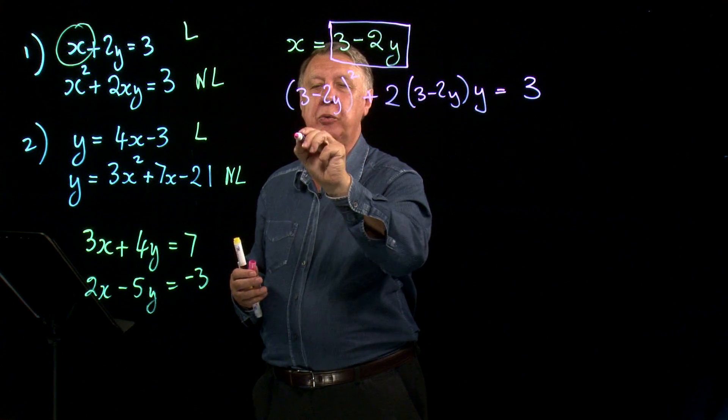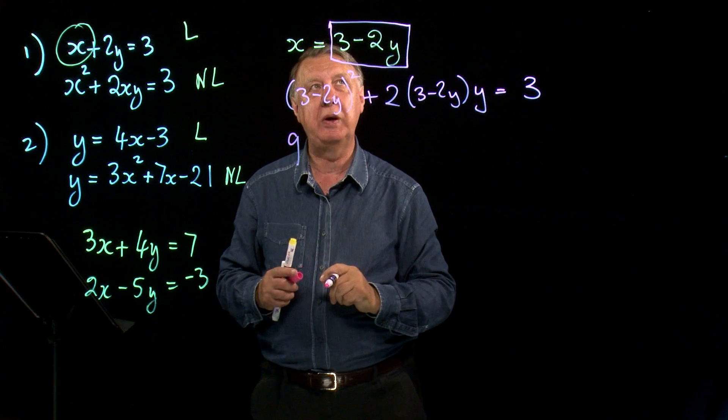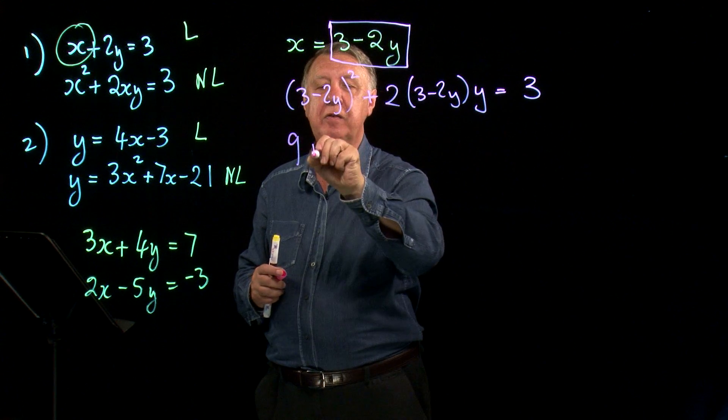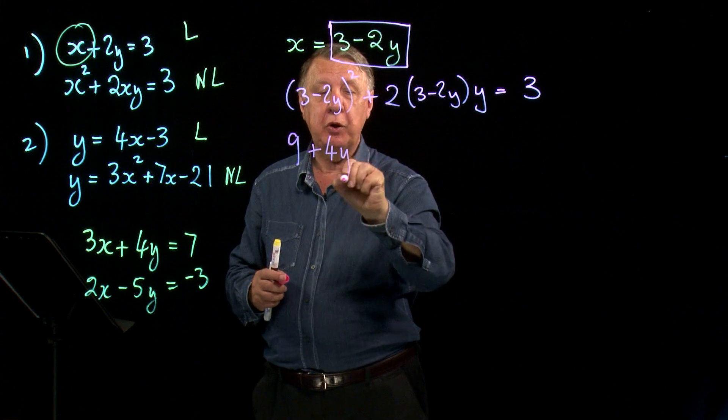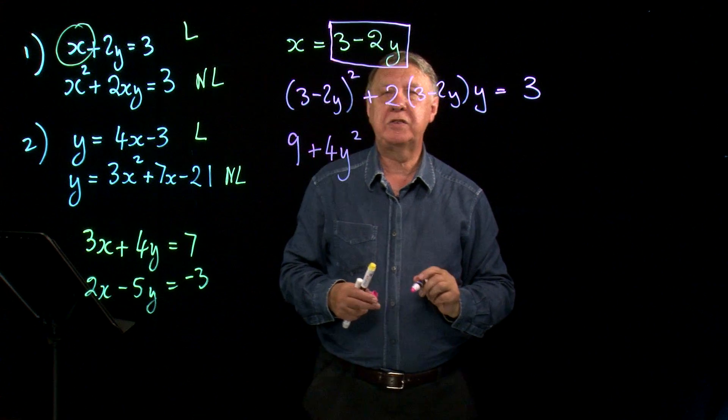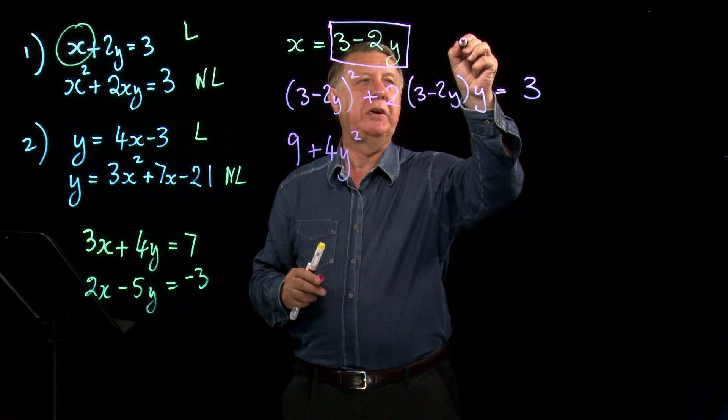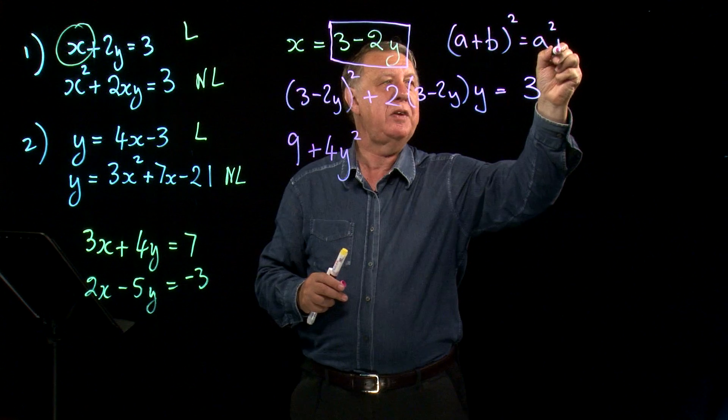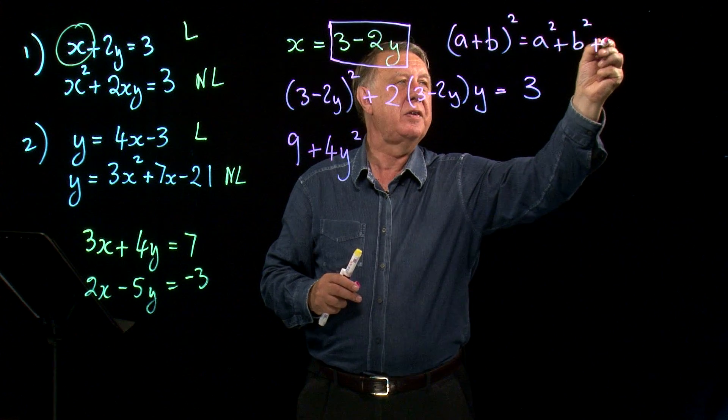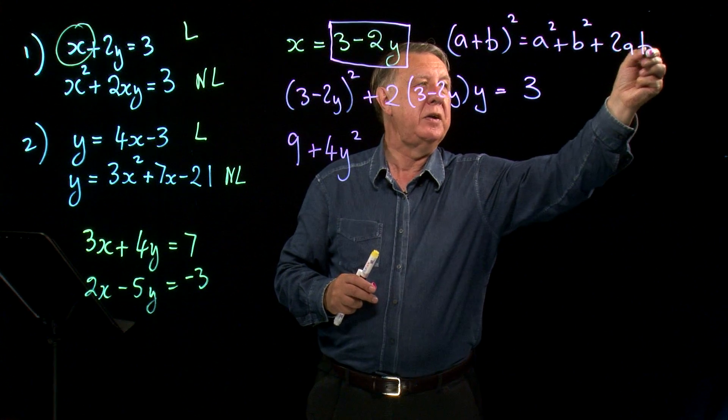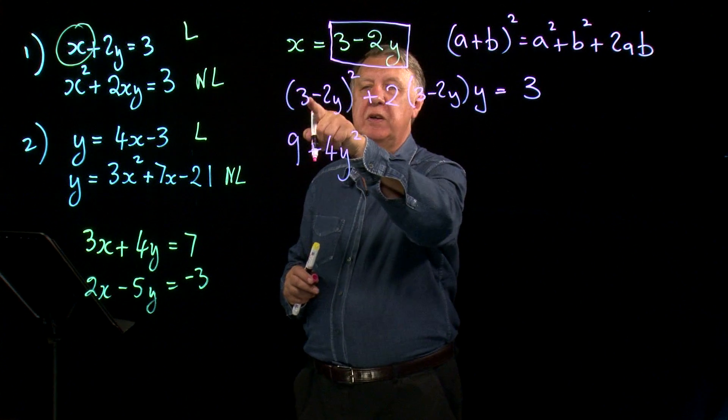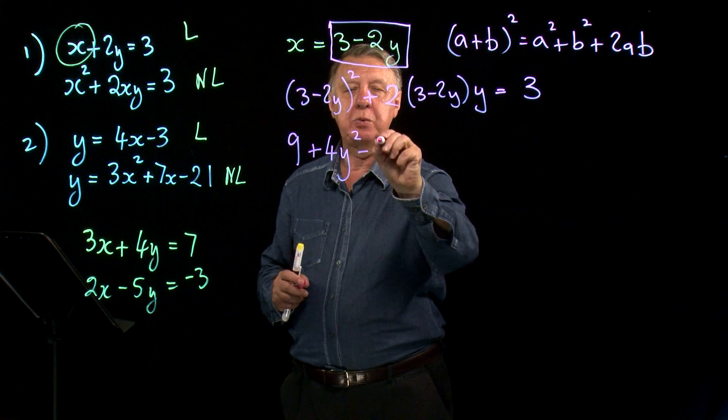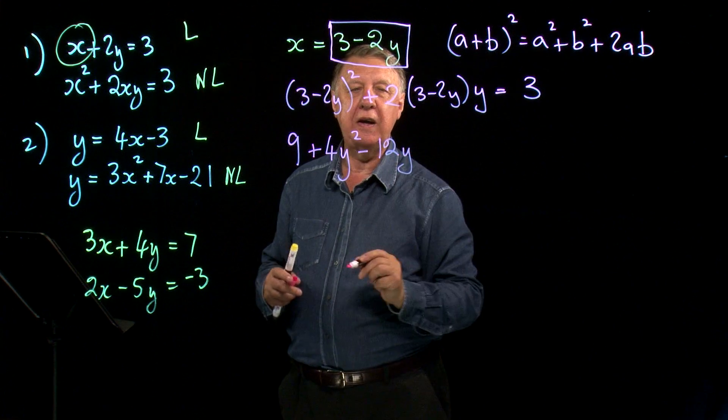If you square out a bracket, you get the first number squared, you get the second thing squared. Now if you square something negative it becomes positive, and then you get twice the product, because remember (a+b)² is a² + b² + 2ab. What is the product here? Three times negative 2y is negative 6y. Twice that is negative 12y.